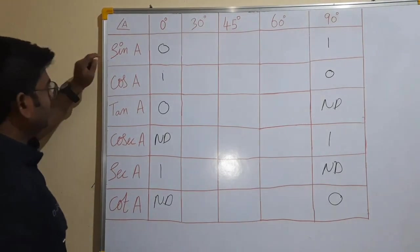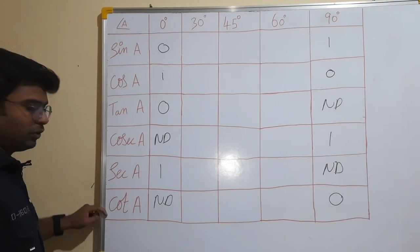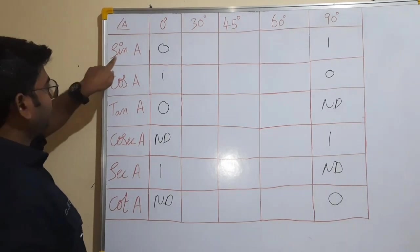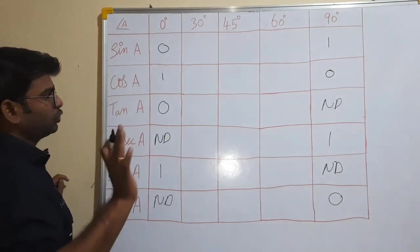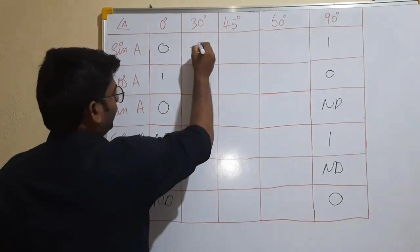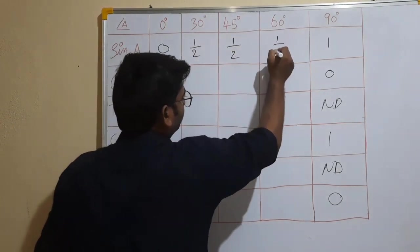Next, now sin cos cot, cosec sec cot. Now, sin first starts now. You can see how you can see. 1 by 2, 1 by 2, 1 by 2.